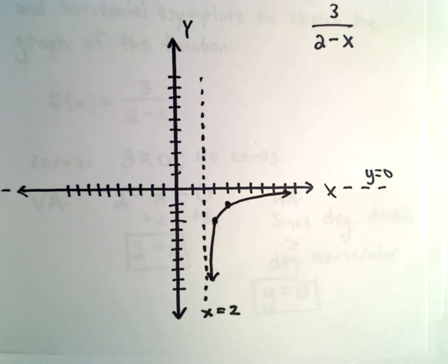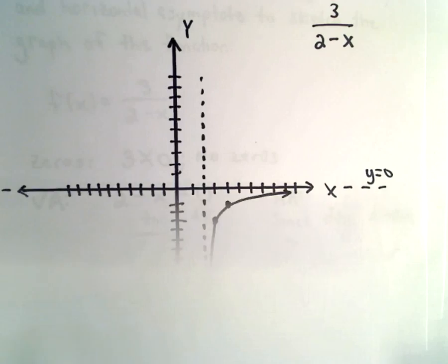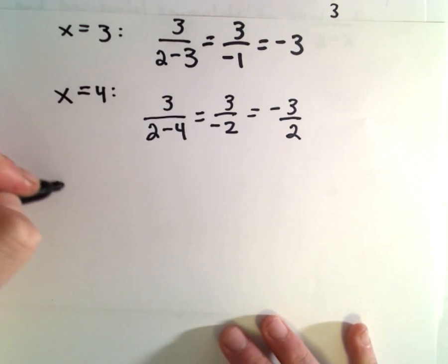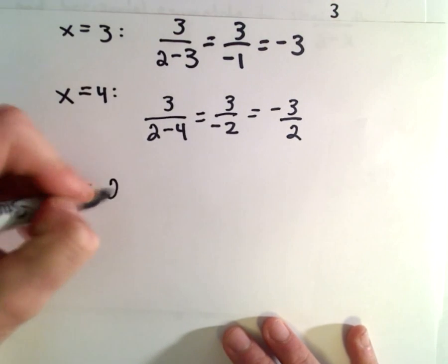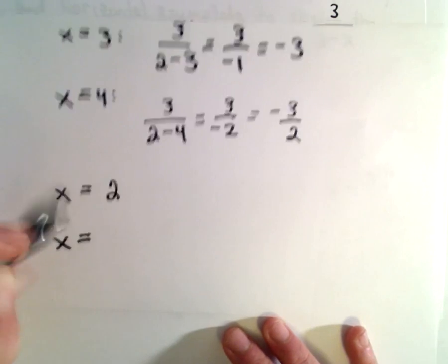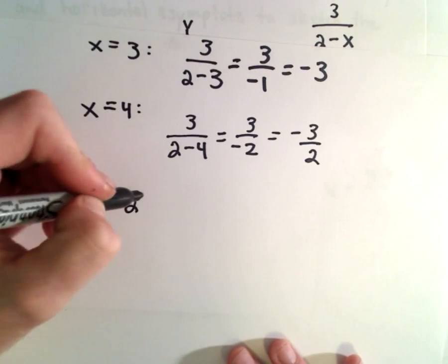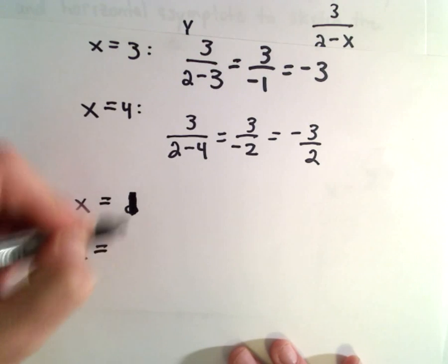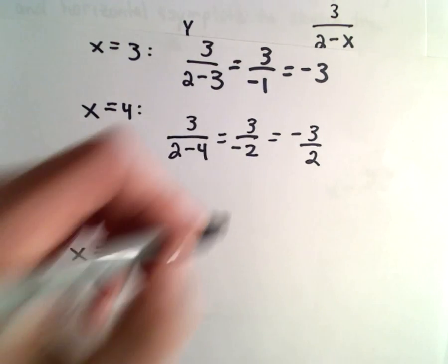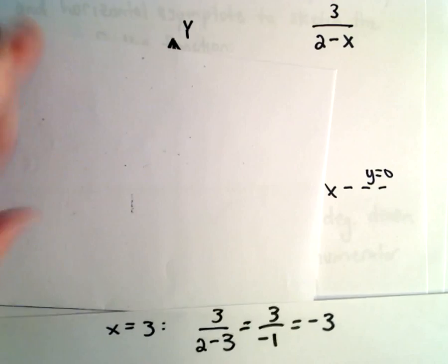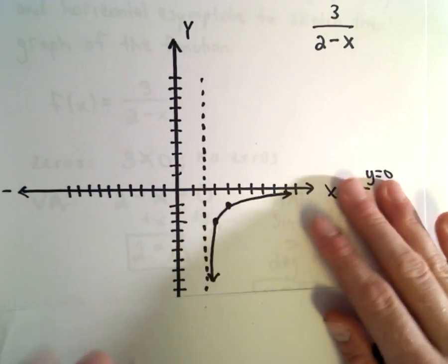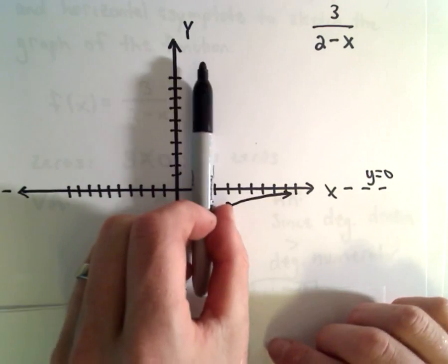Let's plot maybe two more points. Let's use 2 and 1. I think you'll see we've got a little bit of symmetry here. Actually, not 2 because that's undefined. So let's use x equals 1 and x equals 0. We're going to have some symmetry about our vertical asymptote.